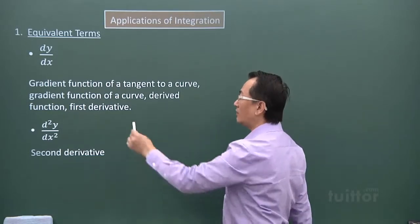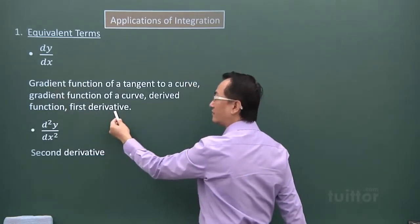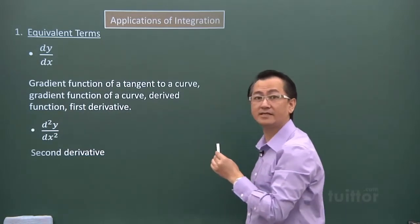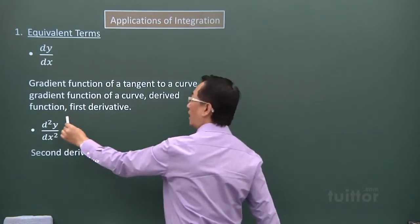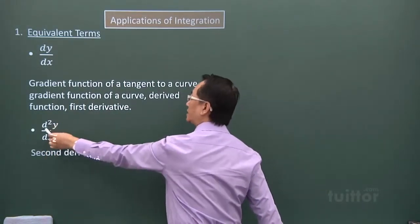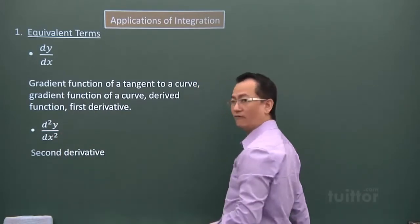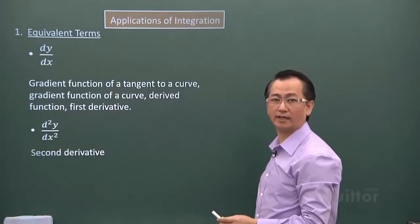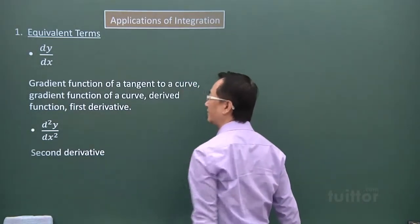But dy over dx is also the gradient function of a curve or derived function of first derivative. So if dy over dx is the first derivative, then the second derivative will have a symbol like this, d squared y over dx squared. So that is the second derivative.